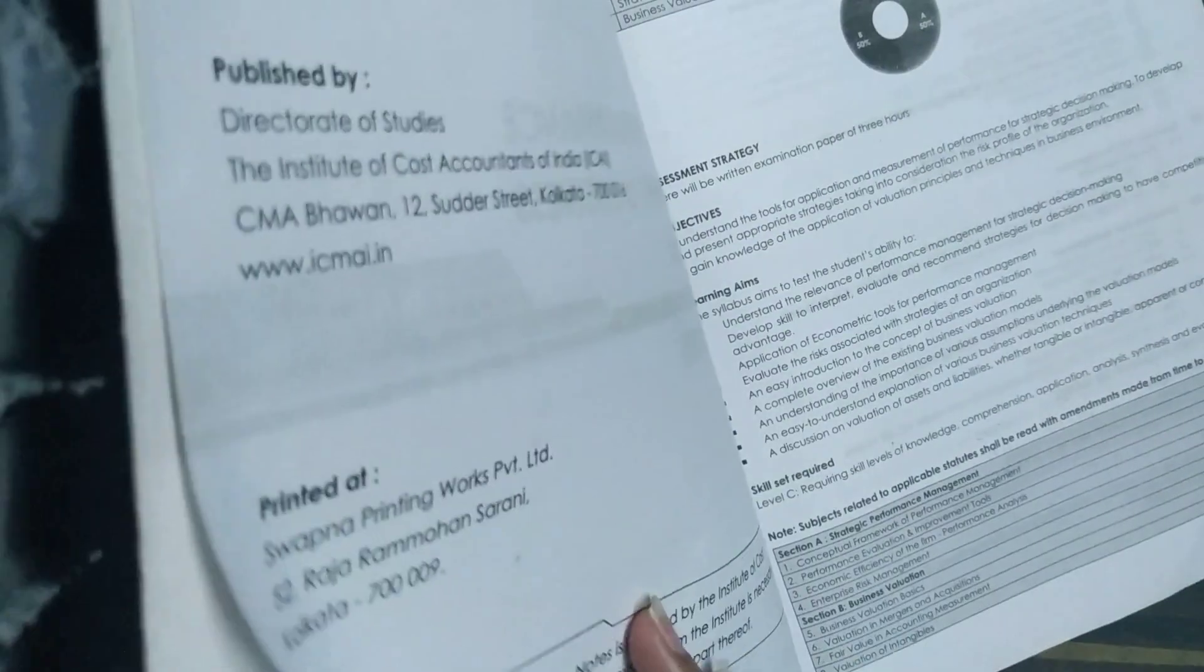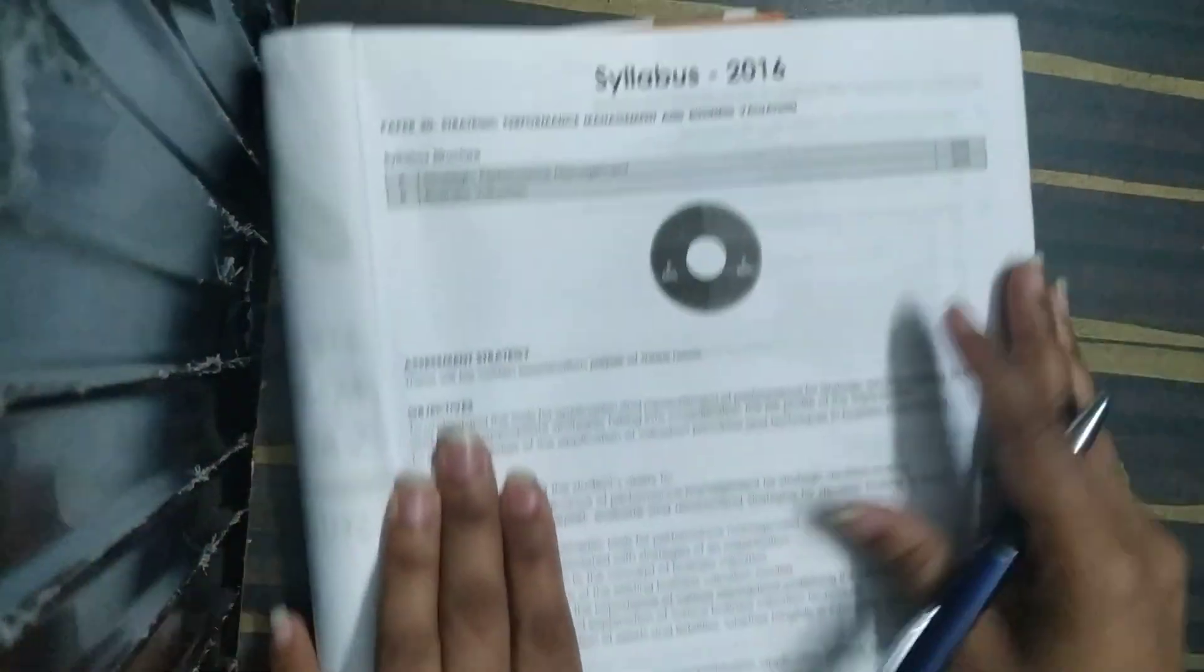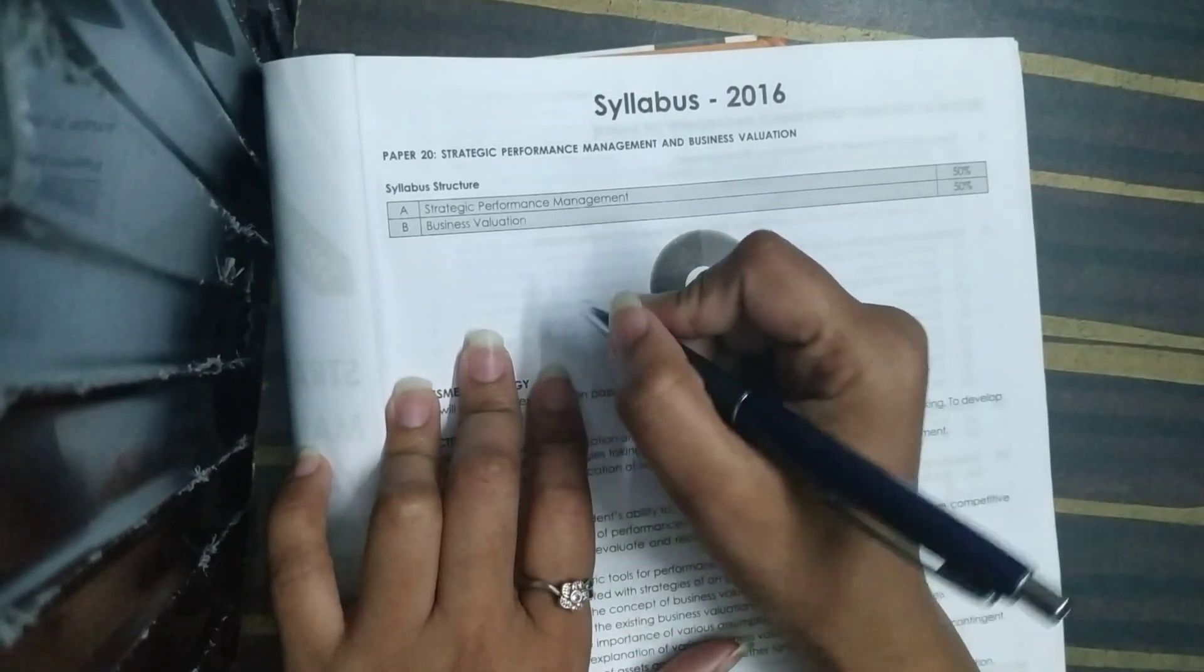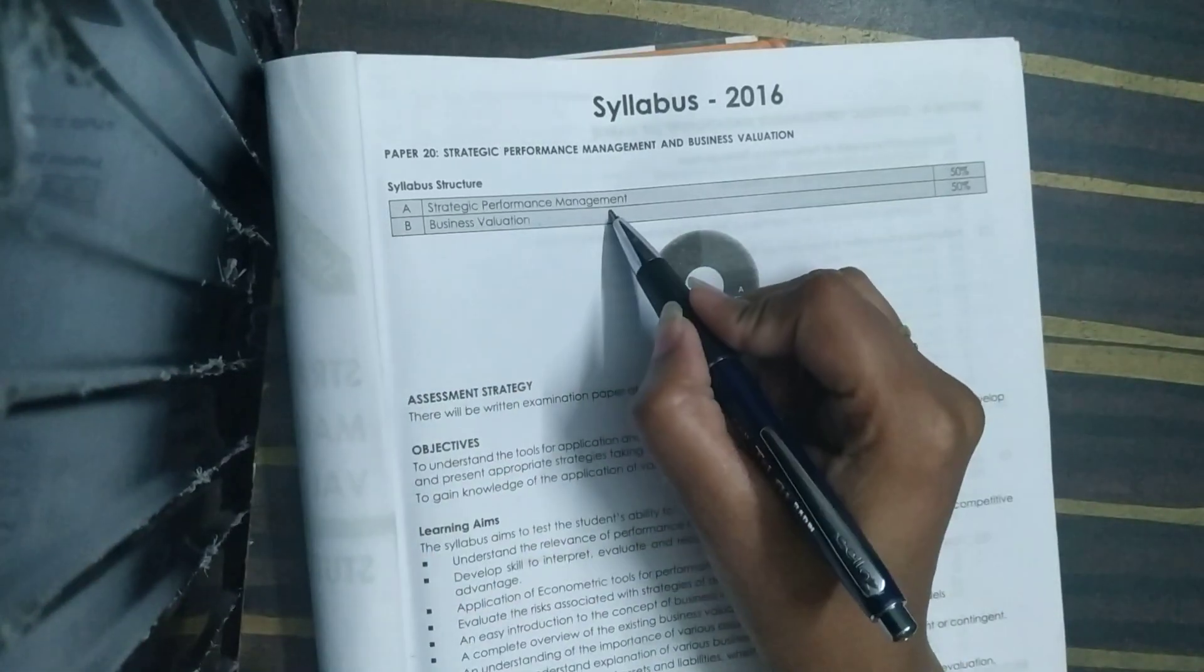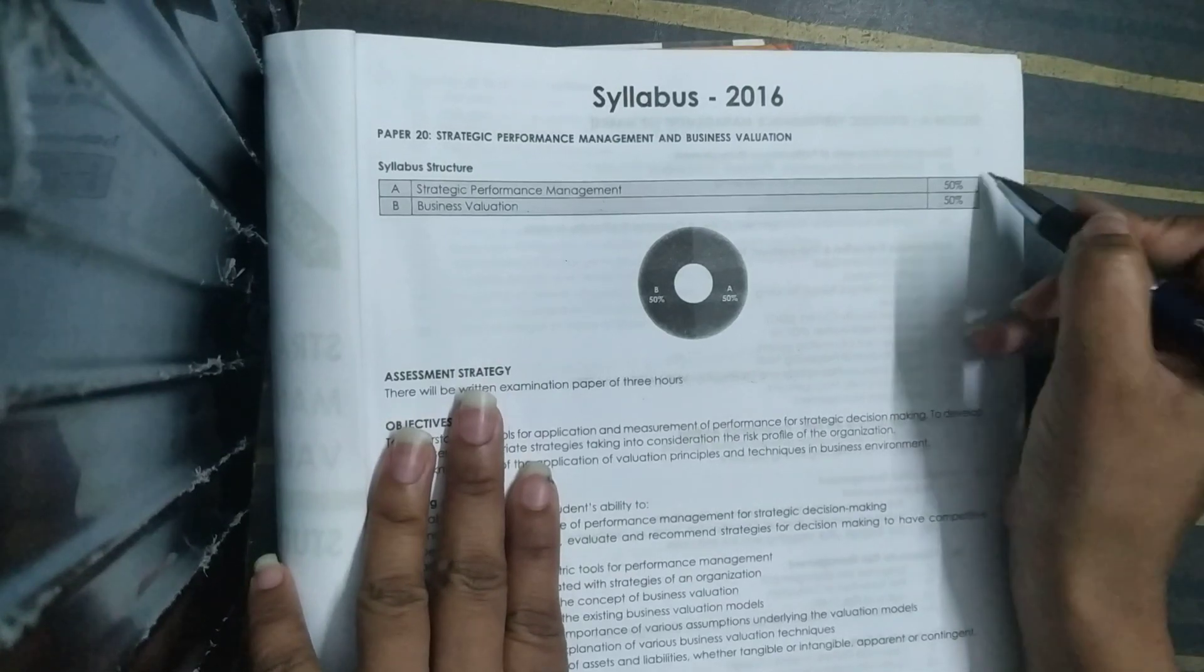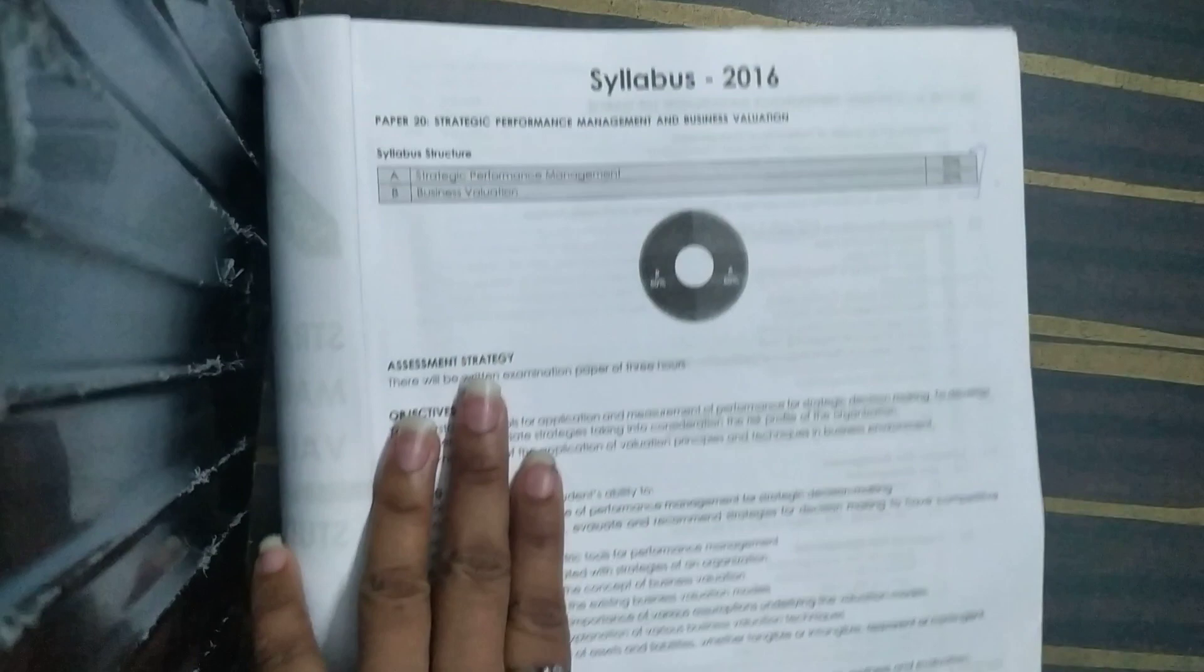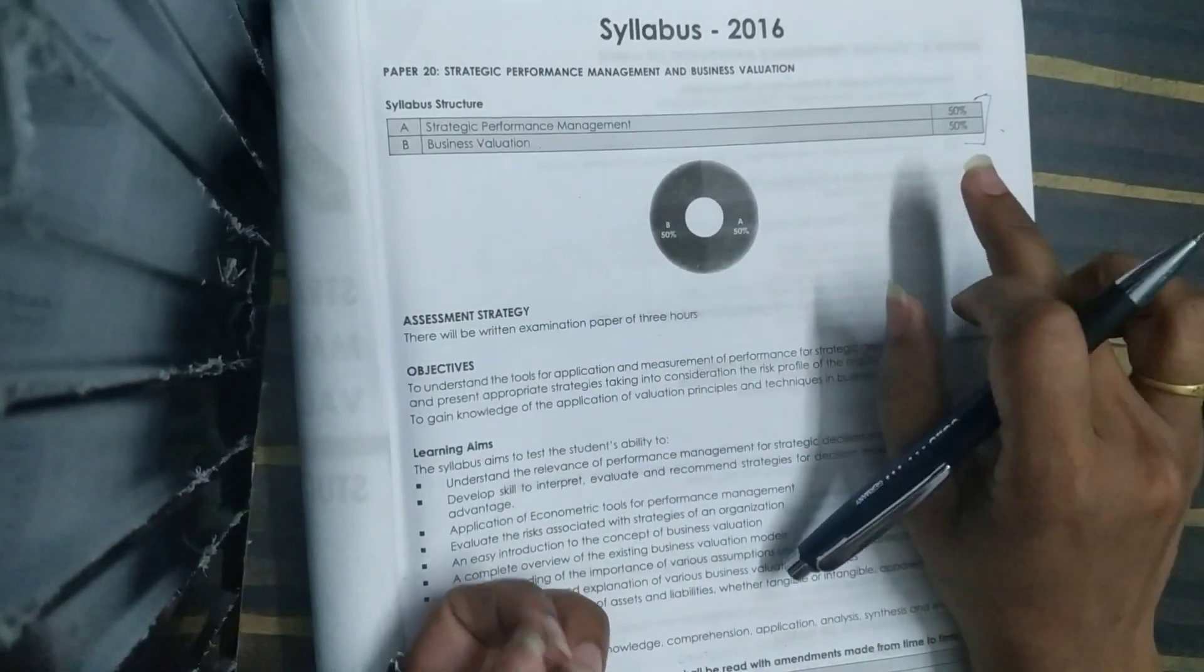Today I am going to tell you how to study the subject and how to achieve the highest marks. This subject is divided into two parts: Strategic Performance Management and Business Valuation. Both cover 50% weightage in each section. SPM has 50% marks and BV has 50% marks.